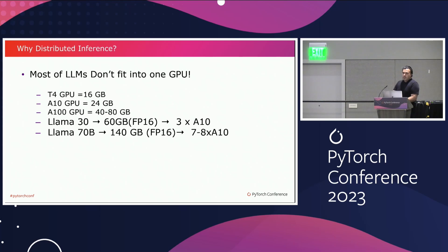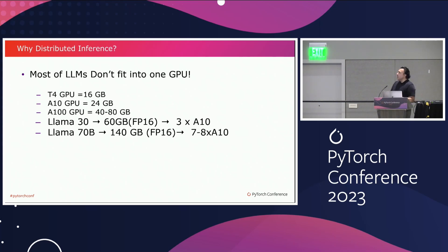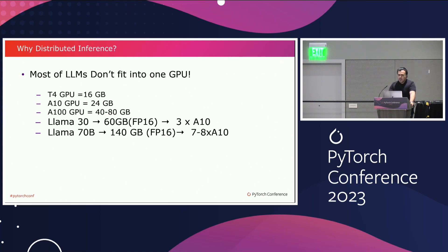Why distributed inference? Simply, most of these models won't fit into one GPU. Typically a GPU has between 16 to 40 gigabytes of memory. If you look at a 30B model, in half precision you would need 60 gigabytes of memory. For a 70B LLAMA, it would need a minimum of 140 gigabytes of memory in half precision, which translates to at least eight GPUs. So we need a solution to partition these models over multiple devices.